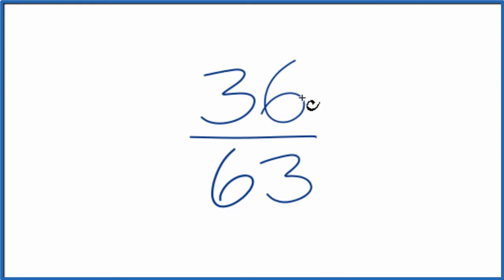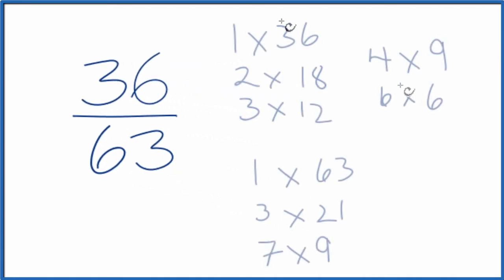That would look like this. So these are the factors of 36, and these are the factors for 63. We're looking for the greatest common factor here, and it looks like 9. 9 is going to be the greatest common factor.